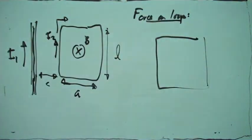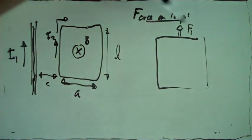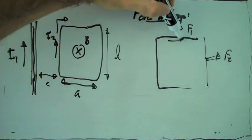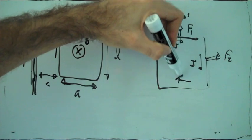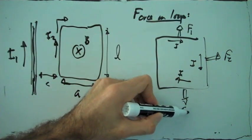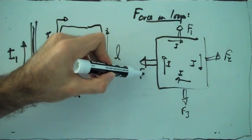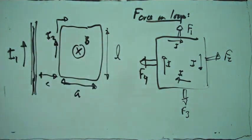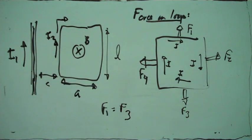So the force on the loop — what does that look like? Well, here the force is up in this segment, let's call it F1. The force is because the current is going there. Then each segment has a force pointing in this direction: F2, F3, and F4. So all four segments of the rectangular loop have those forces, but F1 and F3 cancel each other.